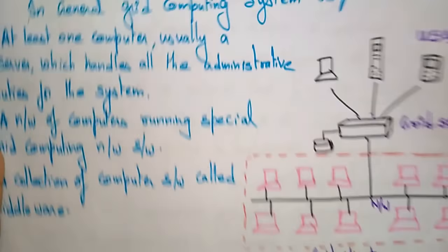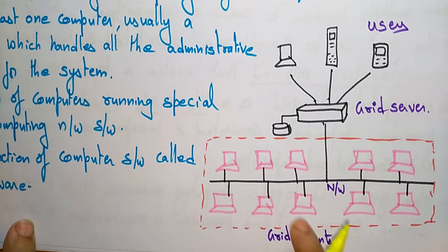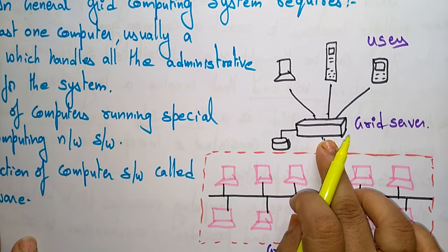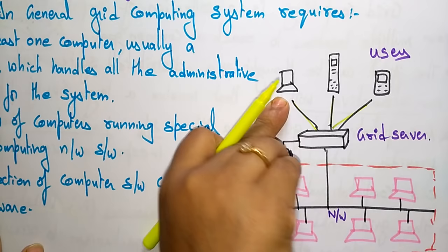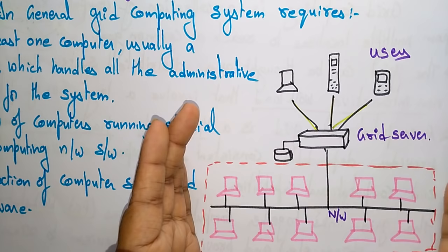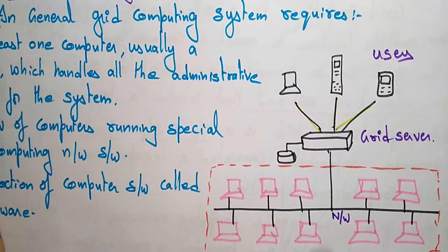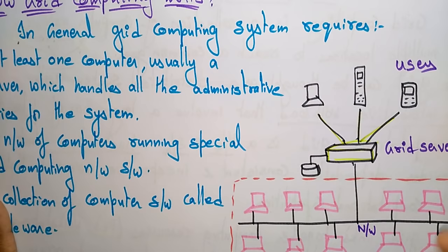Different grid clients — different systems — are connected by a network. These grid clients connect to a grid server, which also has data storage. The server distributes data to different users, whether they are on a mobile phone, server, or desktop. Grid computing requires at least one server to handle all administrative duties.